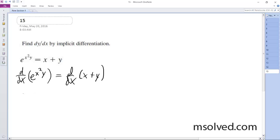So what we have here is the product rule, so we end up having x²y' plus 2xy, times e^(x²y) is equal to 1 plus y'.